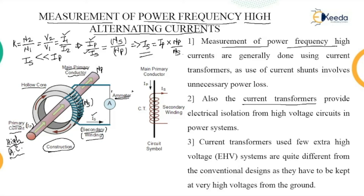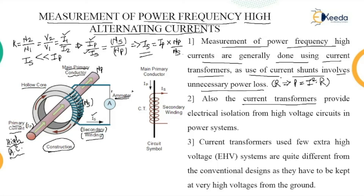The secondary current IS is much less than the value of primary current. Measurement of power frequency high current is generally done using current transformers, as the use of resistive shunts involves unnecessary power loss given by P equals I²R. Instead of using a shunt resistance, a current transformer is preferred, as it not only prevents power loss but also gives electrical isolation, isolating from the high voltage circuit in the power system.